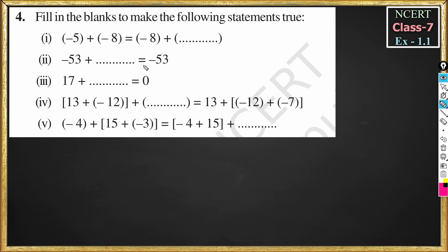Question 2: minus 53 plus dash is equal to minus 53. By the additive identity property, when 0 is added to any integer we get the same integer. So if we add 0 to minus 53, the result is minus 53. Therefore the answer is 0.